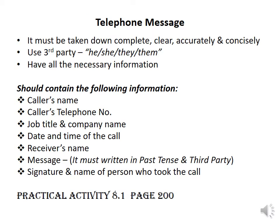The first document is a telephone message. A telephone message is taken if the person that the call was intended for is not available. As the receiver of the call, you will take a telephone message and write it down while you have the caller on the line. You must make sure you complete the information correctly, clearly, accurately, and concisely. You use third party — he, she, they, and them — when completing the telephone message.